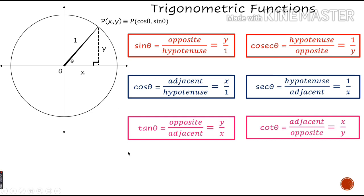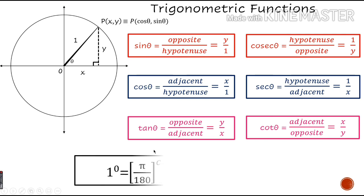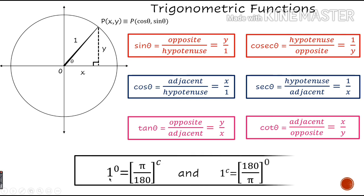We also know the relation between degree and radian: pi radian is equal to 180 degrees. So we know how to convert degrees into radians and radians into degrees. One degree is pi upon 180 radian, and one radian is 180 upon pi degrees.